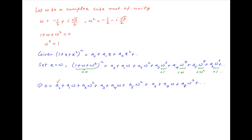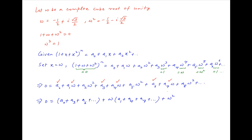We therefore get, on the right hand side, collecting the coefficients of terms independent of omega: a0 plus a3 plus a6 plus and so on; plus collecting the coefficients of terms involving omega: plus omega times in brackets a1 plus a4 plus a7 plus and so on; and finally, collecting terms involving omega square: plus omega square times in brackets a2 plus a5 plus a8 plus and so on.